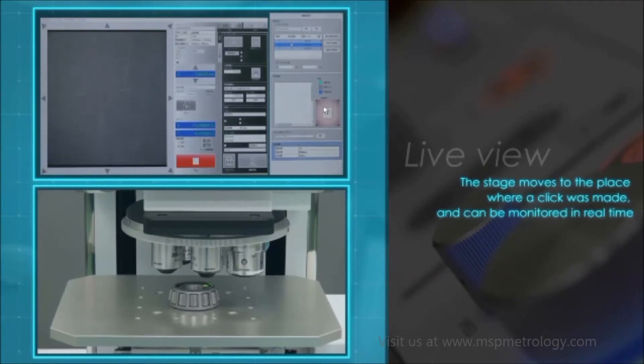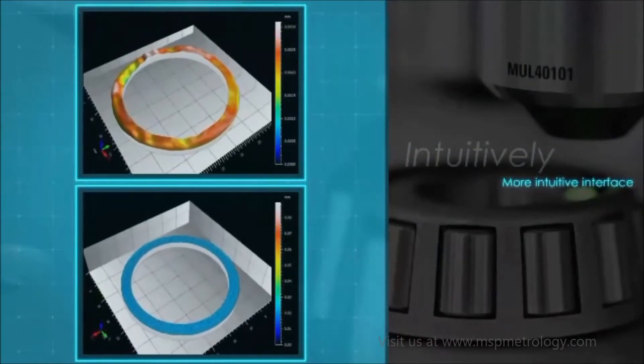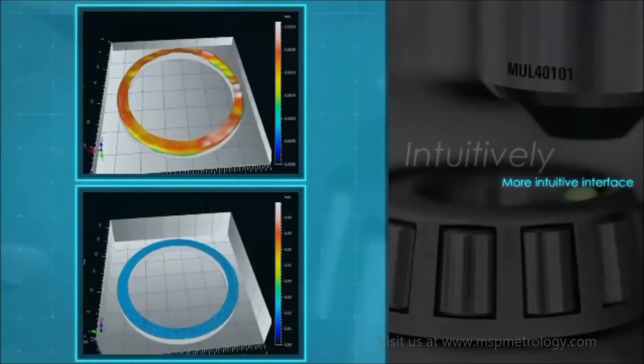Combining the measured image data, you can conduct wider range measurements. For example, if you combine the measurement data of a bearing, you can clearly view waves and roughness on the entire measurement surface in an easy-to-understand manner.